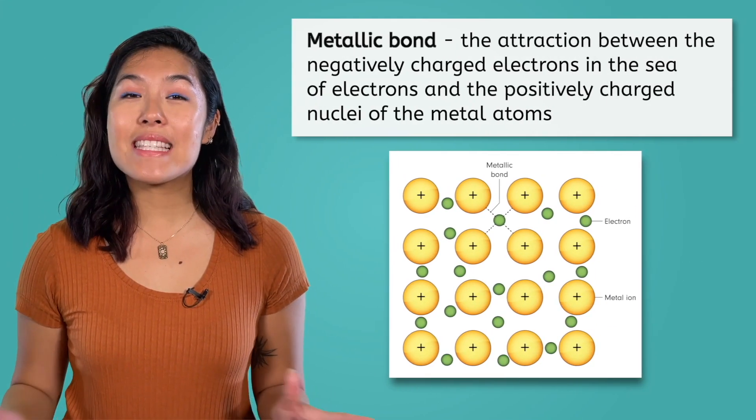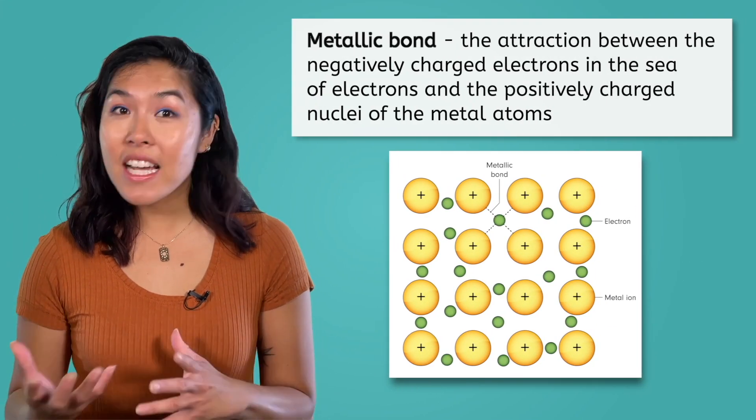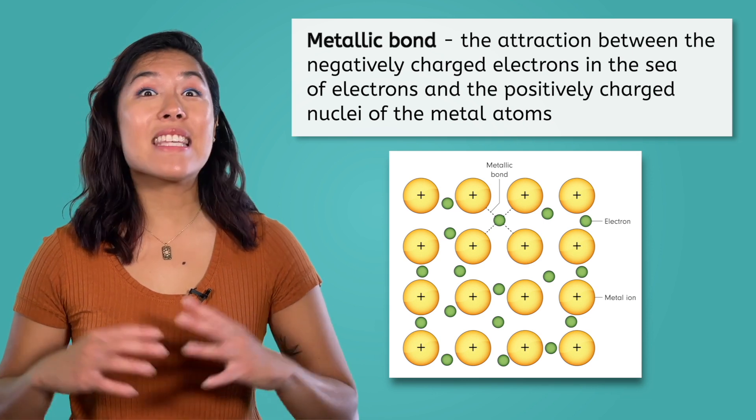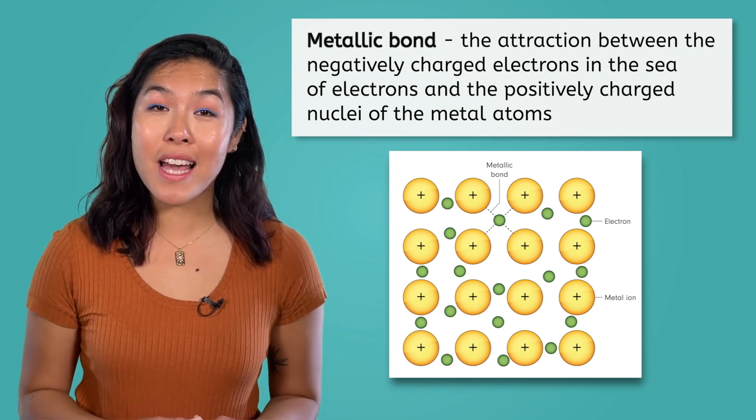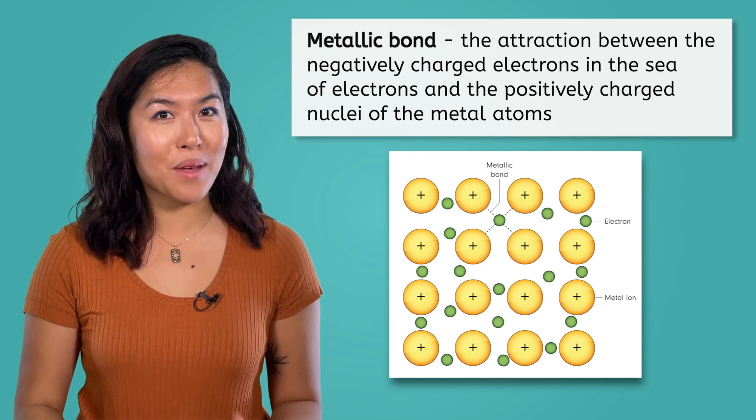A metallic bond is the attraction between the negatively charged electrons in the sea of electrons and the positively charged nuclei of the metals in the substance.